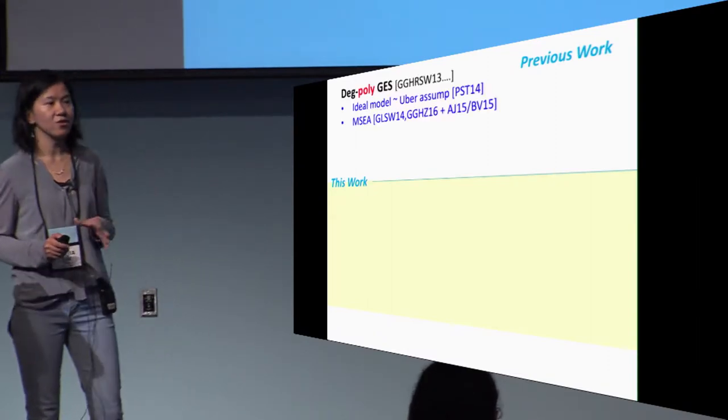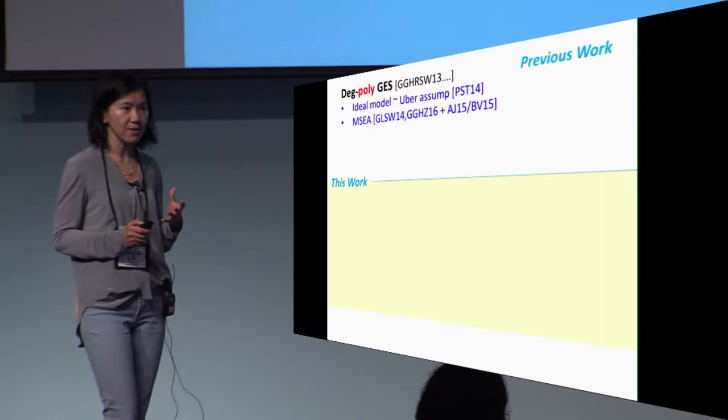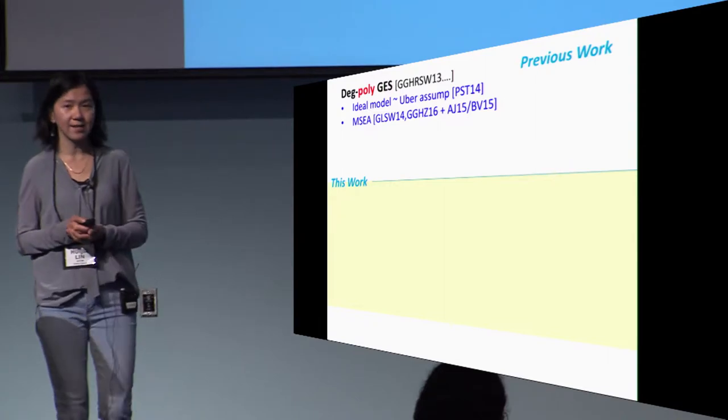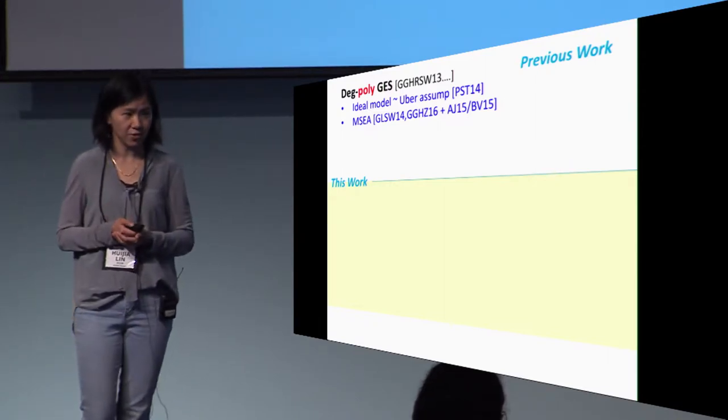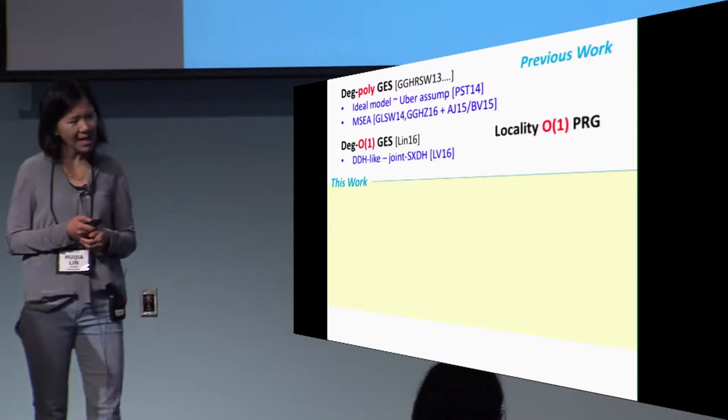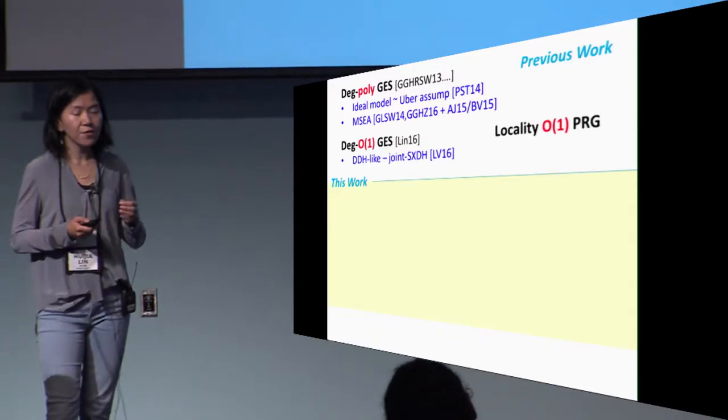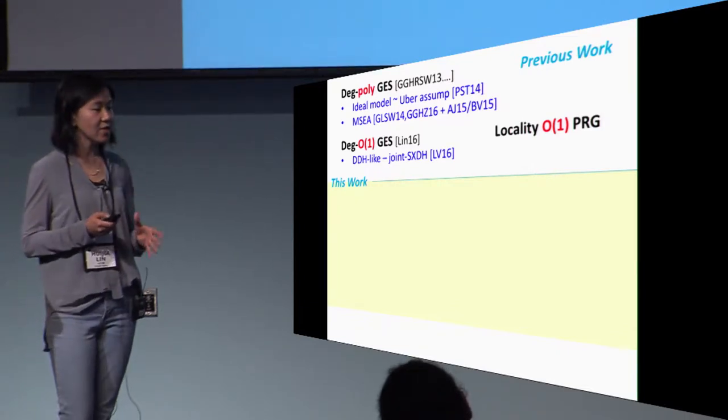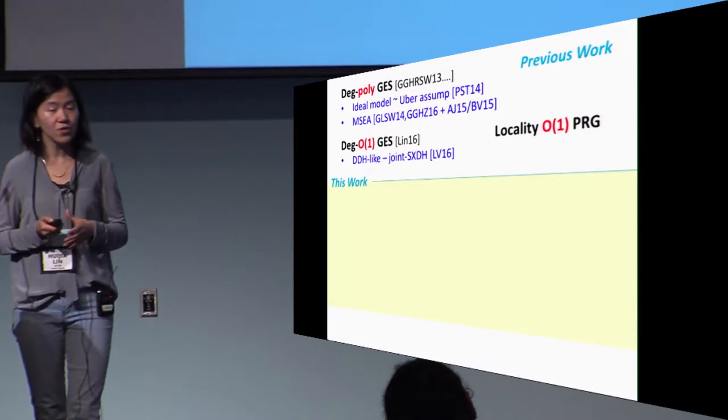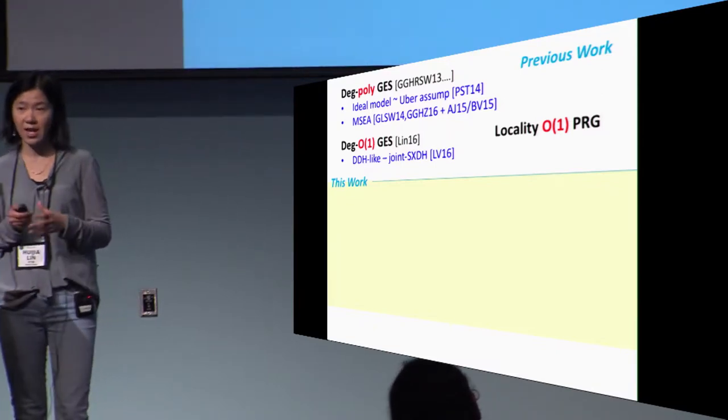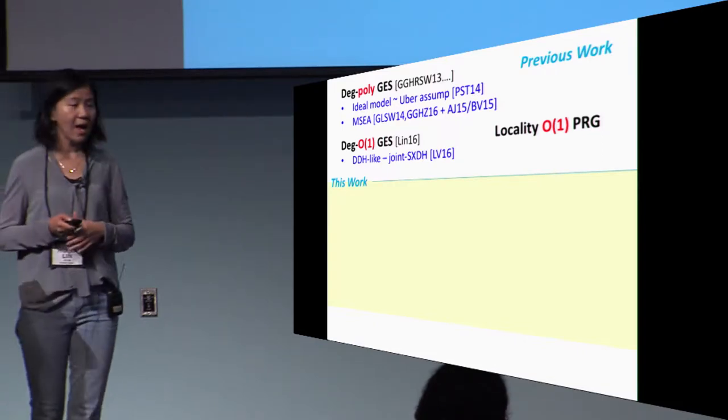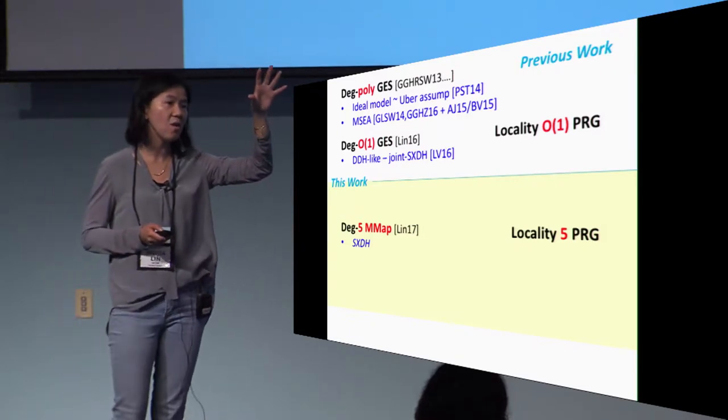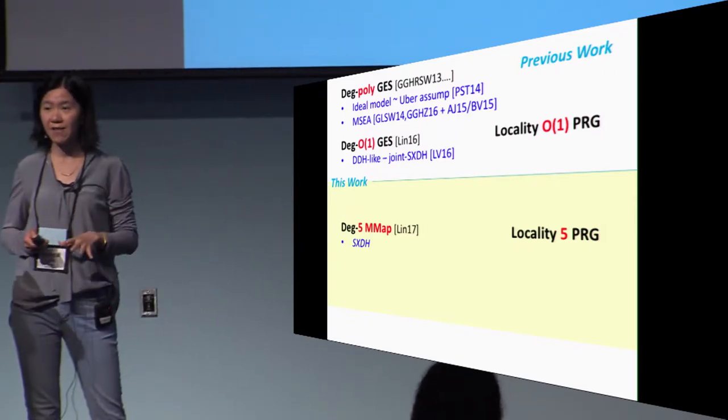The first generation of construction always used a polynomial degree multilinear map, or in fact the stronger variant of graded encoding schemes. Their security is often analyzed in the ideal model or used a strong über assumption with some exceptions. Last year, Jain and Sahai gave the first construction of IO based on just constant degree graded encodings with a simple DDH-like assumption called joint SXDH.